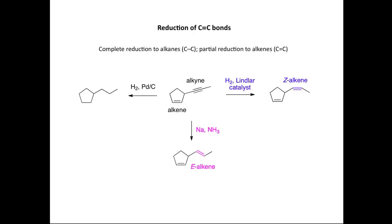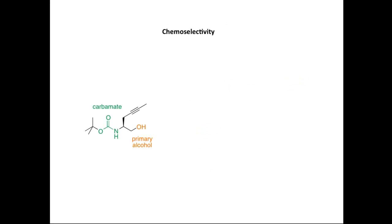So now we have a way of converting alkynes into Z- or E-alkenes. And let's have a look at the use of this in synthesis. And we're going to look at some chemoselective reduction processes to show how the C-C triple bond can be selectively reduced in the presence of other functional groups.